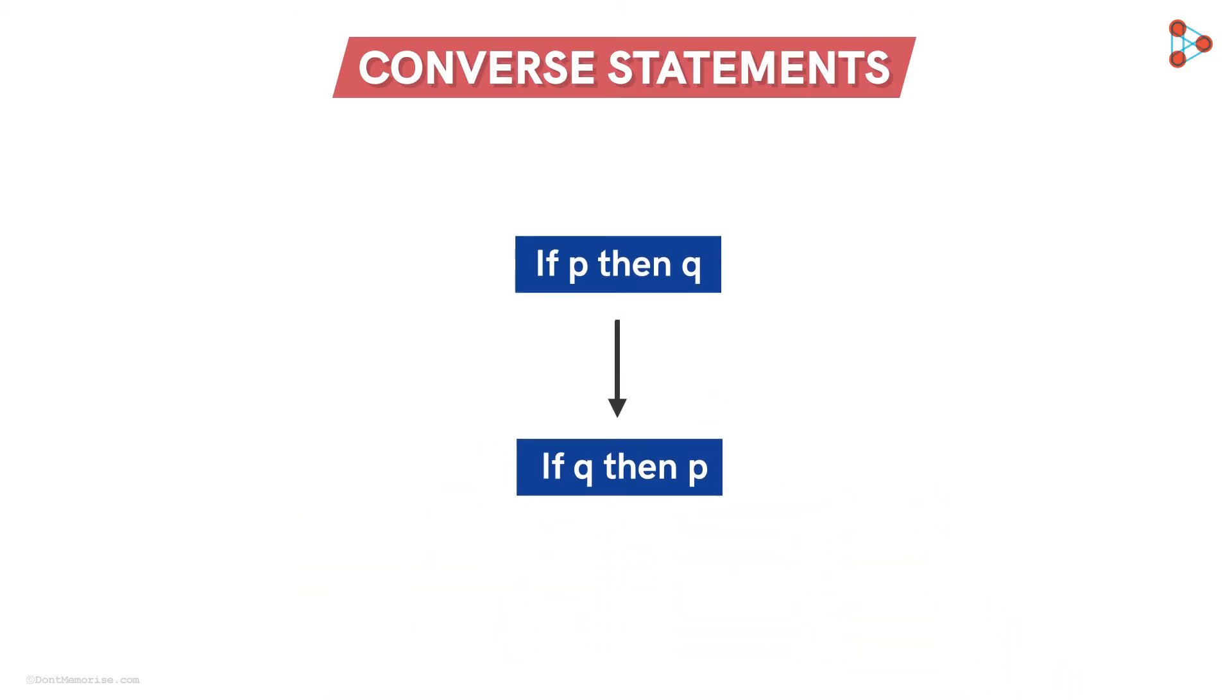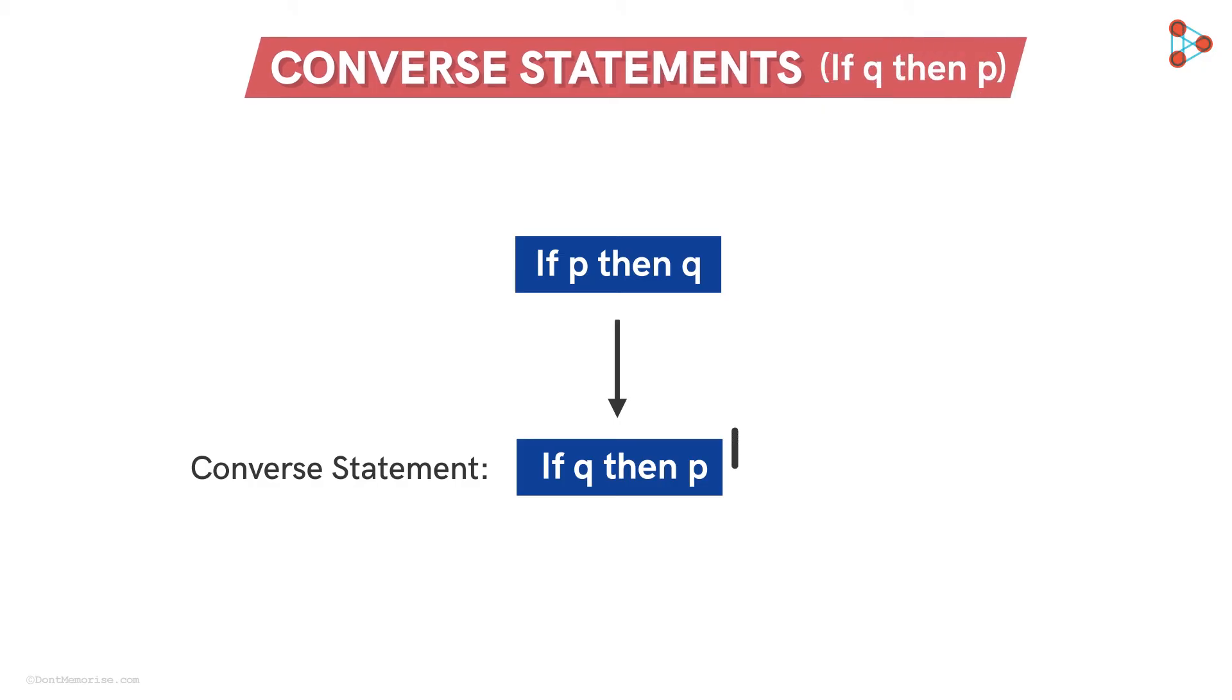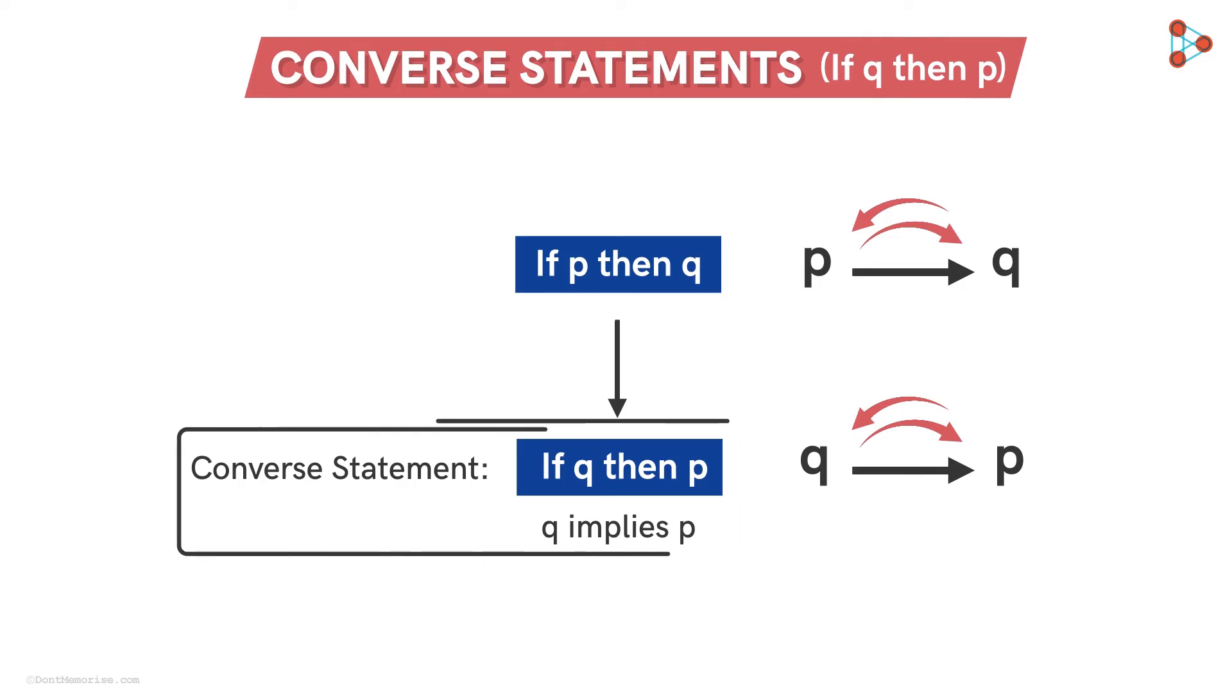Yes, for a statement of the form if P then Q, its converse statement would be if Q then P, that is Q implies P. It is nothing but interchanging the condition and the outcome. Simply put, it means that if Q happens, then P also happens. Now let us see whether the converse statement is also true. Let us find out.